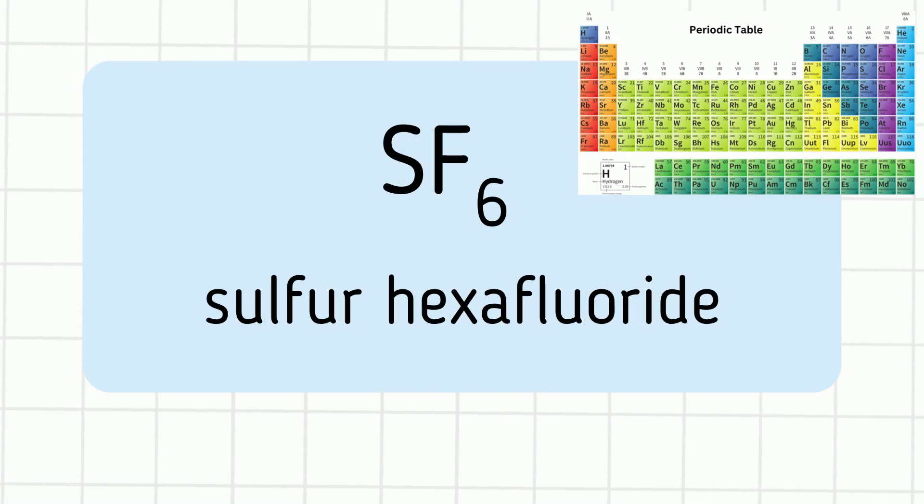Next, let's go with sulfur hexafluoride. Sulfur is found in group 16, and it is a reactive nonmetal. And then the fluorine is found in group 17, and it is a reactive nonmetal. So we have nonmetal, nonmetal. So it is a covalent bond.